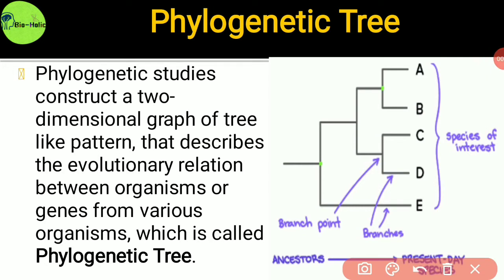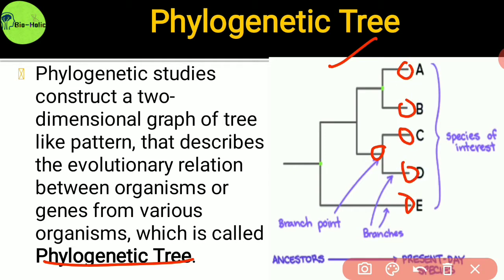The phylogenetic tree: phylogenetic studies construct a two-dimensional graph of tree-like pattern that describes the evolutionary relation between organisms or genes from various organisms, which is called a phylogenetic tree. This picture shows the phylogenetic tree. This is the branch point and those are the new species which are formed from the ancestral organism by mutation.